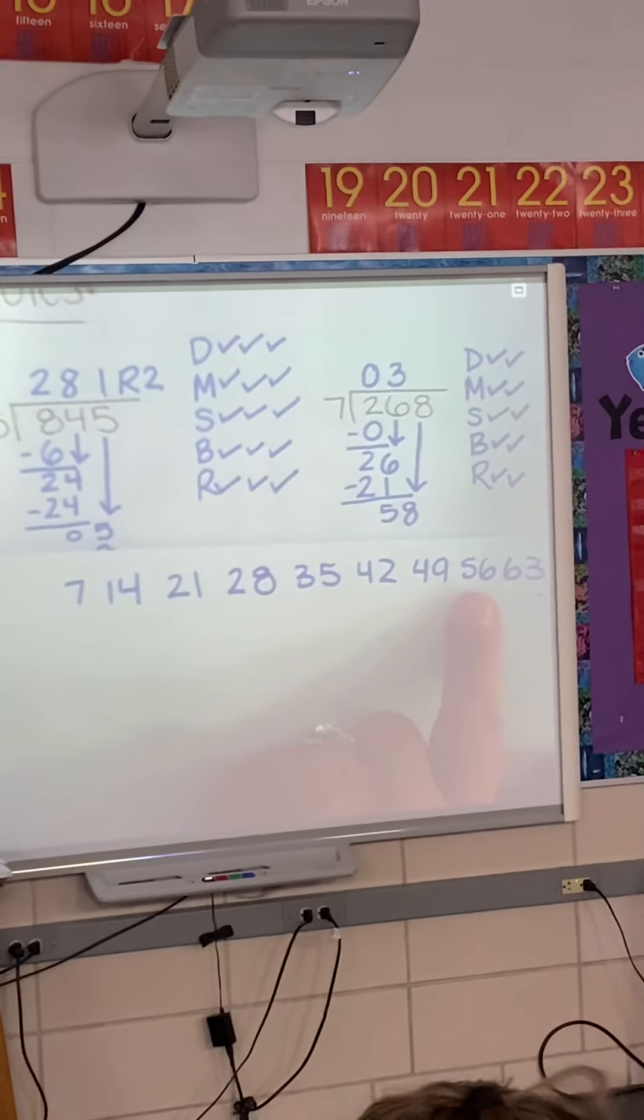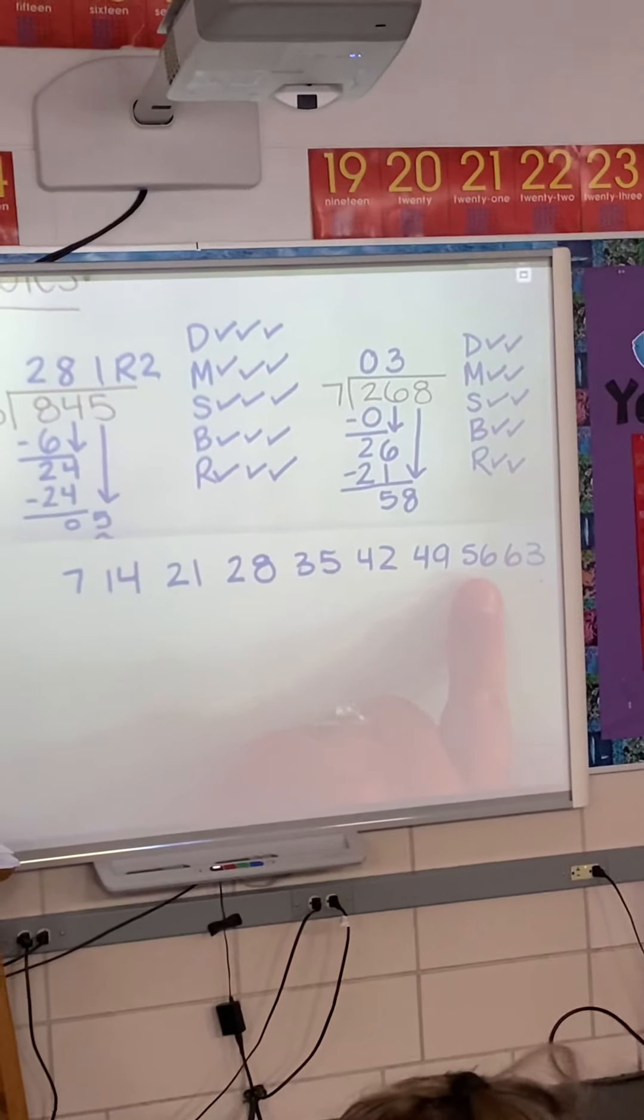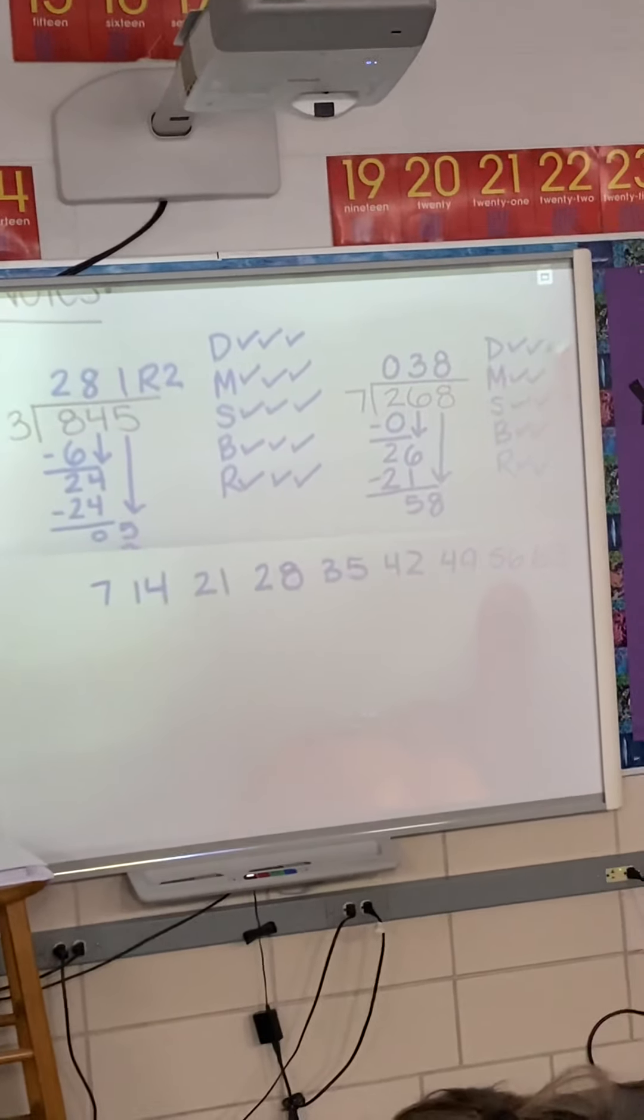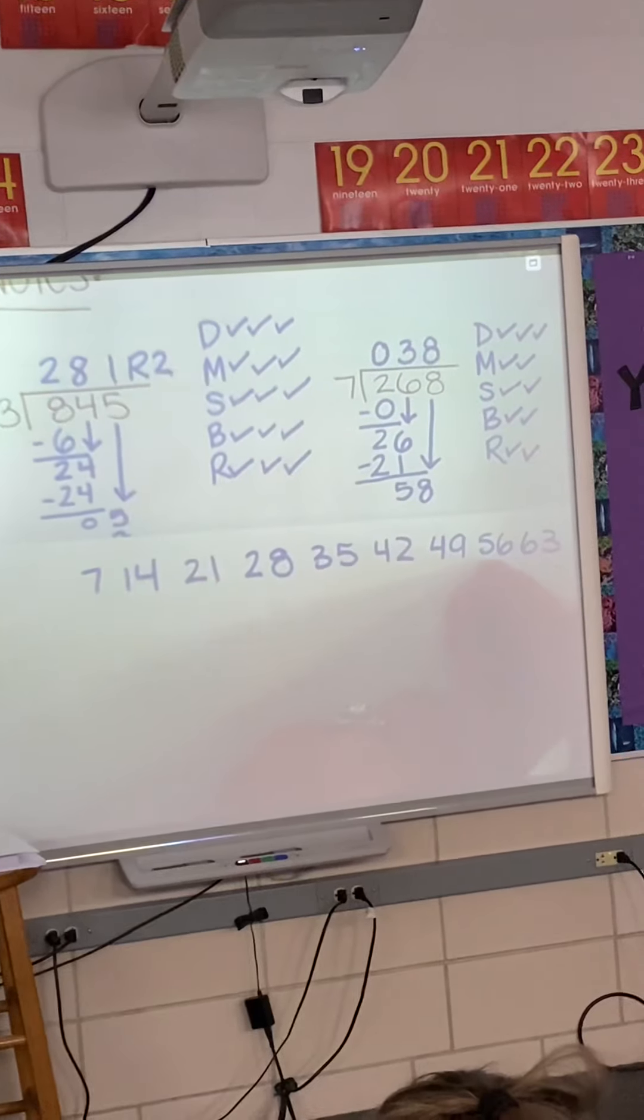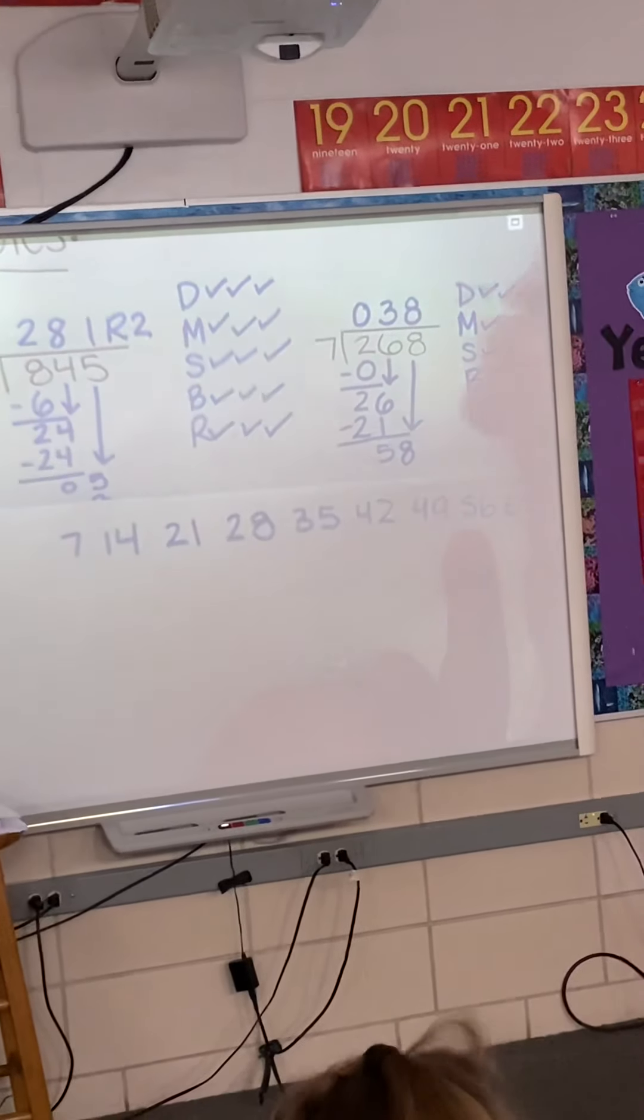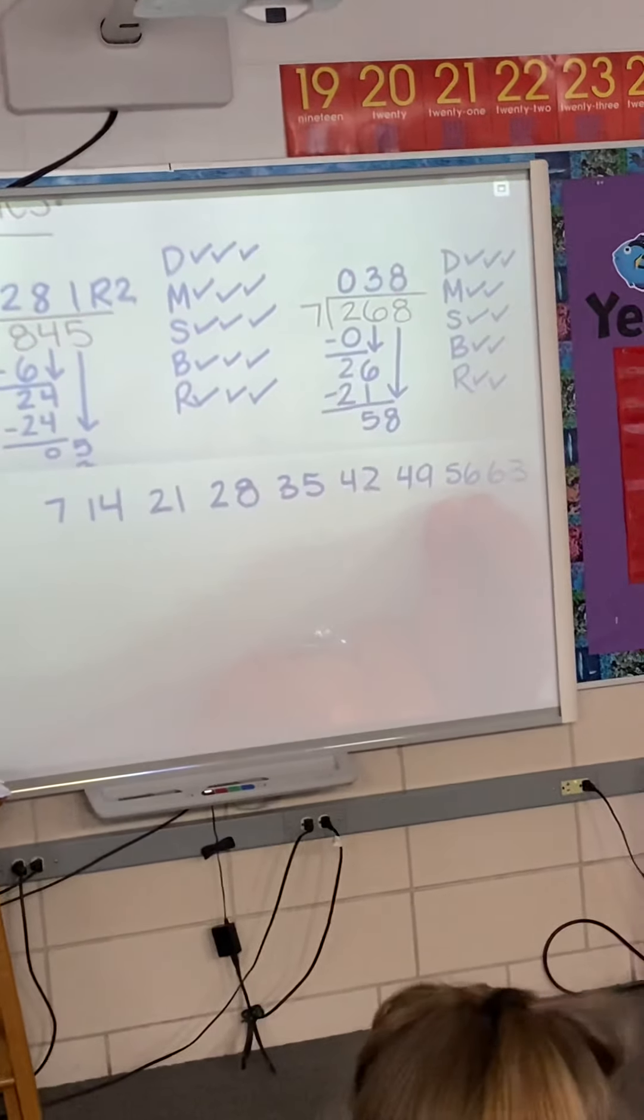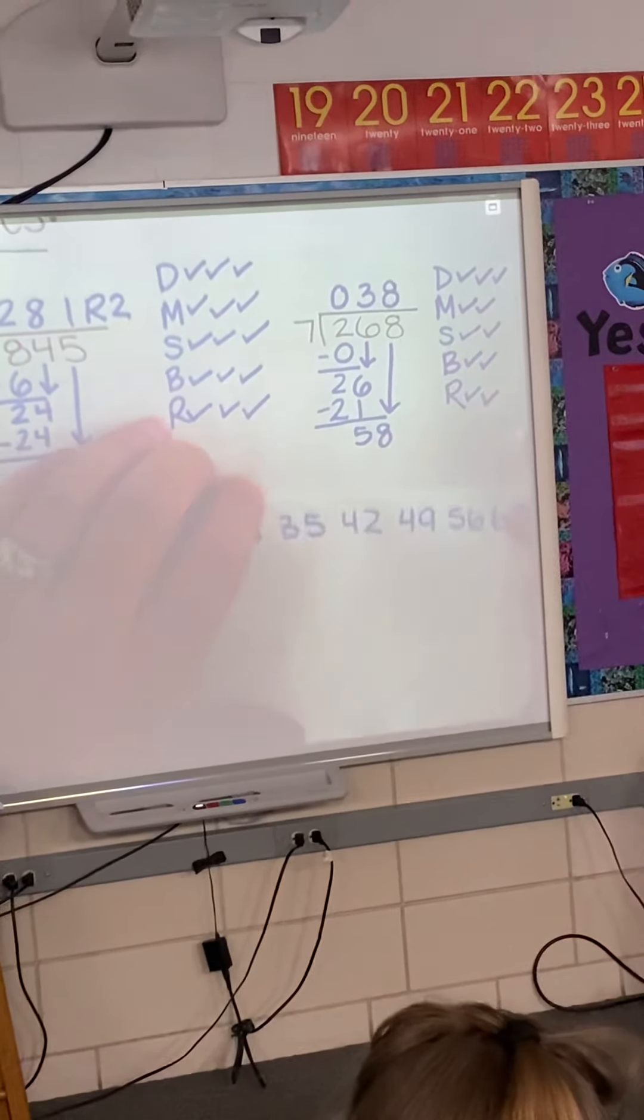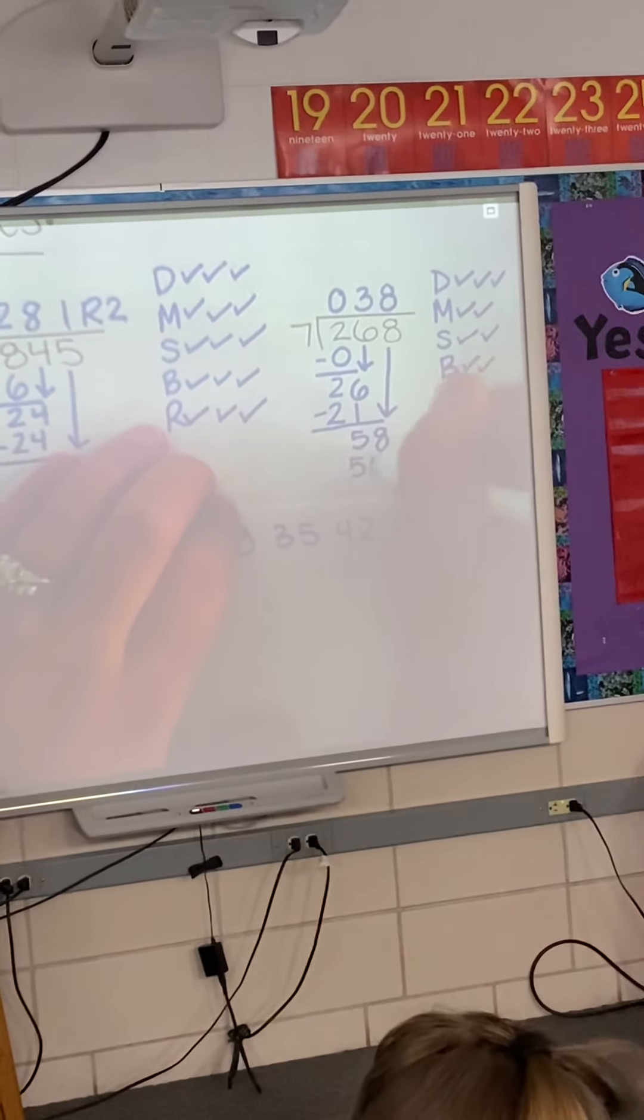And what number in line is that? Eight. Eight. So, I'm putting eight at the top. Dad cares about the number in line. Mom cares about this number. So, eight times seven should equal 56. That's what I'm going to put down below. I'm going to check off mom.